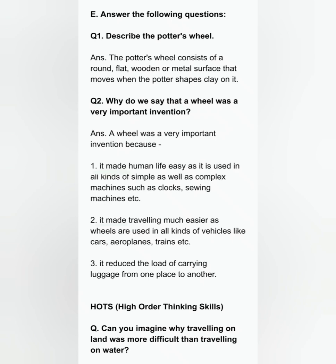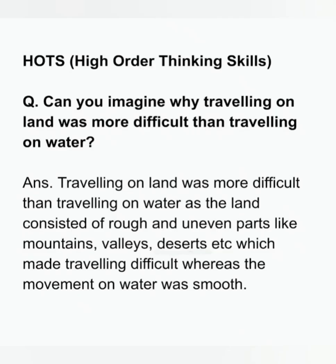HOTS: Can you imagine why travelling on land was more difficult than travelling on water? Travelling on land was more difficult than travelling on water as the land consisted of rough and uneven parts like mountains, valleys and deserts, which made travelling difficult, whereas the movement on water was smooth.